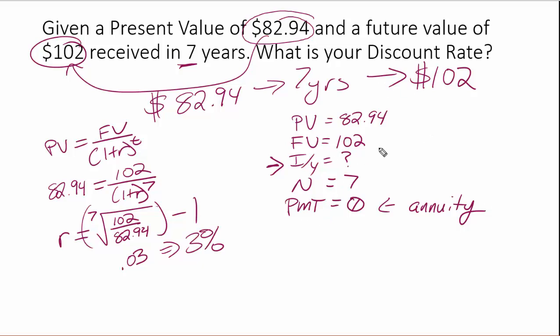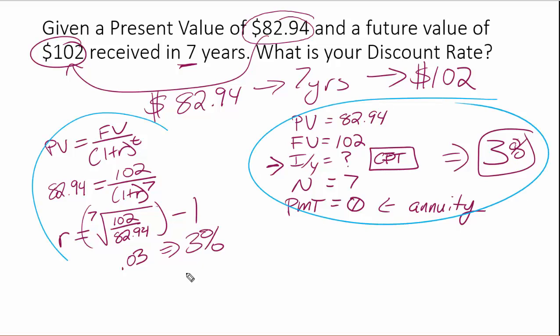And then we just hit the compute button. We hit compute, and then I over Y, and that's going to give us the same exact number here. It's going to tell us that our answer is 3. So that's at 3%. And that is essentially what our answer is, whether we do it algebraically or if we do it through the calculator.